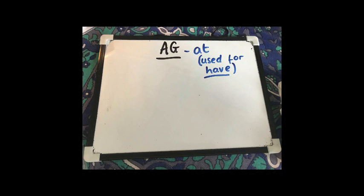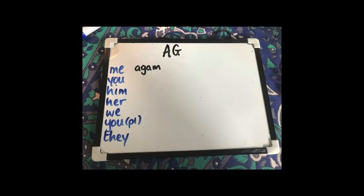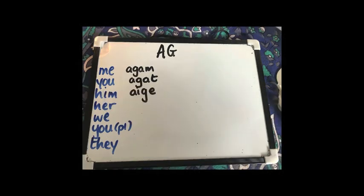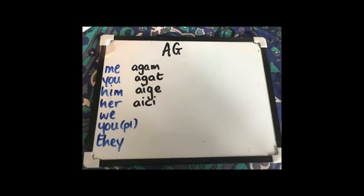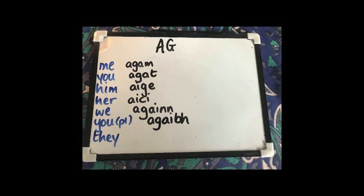'Ag' first of all means 'at', but it's also used for 'have', as in 'I have a pen', or 'the pen is at me'. So: agam, agat, aige, aici, againn, agaibh, agaibh, acu.